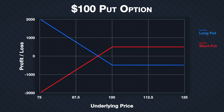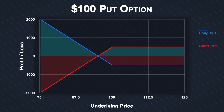Here we can see the same put option we looked at in the previous lecture, with a strike price of $100 and a premium of $5 per share. The profit or loss of the put option buyer is shown in blue, and in red we can see the profit or loss of the put option seller. At each level of underlying price, the P&L lines for buyer and seller are an equal distance away from the x-axis, but on opposite sides — one positive and one negative. Where both lines cross the x-axis represents the break-even point, i.e. the point at which $0 profit or loss is made.